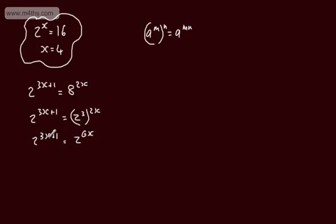we could equate the powers. So we had 3x plus 1 was equal to 6x. Subtracting 3x from both sides, 1 was equal to 3x and x was equal to 1 third.